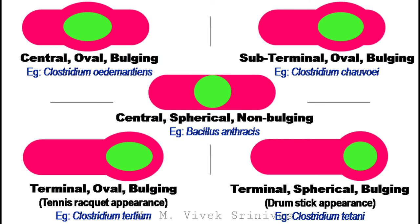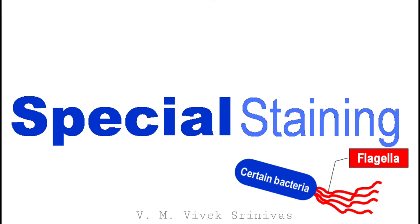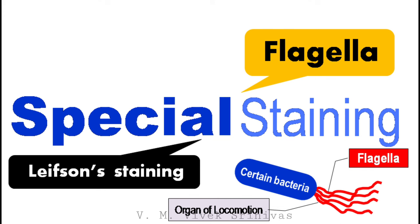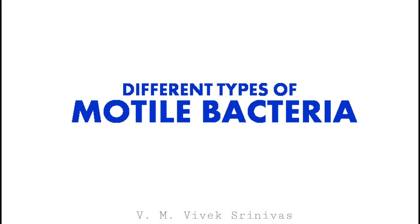So by Schaefer and Fulton's staining technique we can stain and identify different types of bacterial endospore. Next, certain bacteria possess the flagella — the organ of locomotion in bacteria, essential for bacterial motility. This flagella can be stained by the Leifson staining technique. Here the flagella are stained red and the vegetative portion of the bacteria are stained blue. By this staining technique we can identify the different types of motile bacteria based on the position of the flagella.